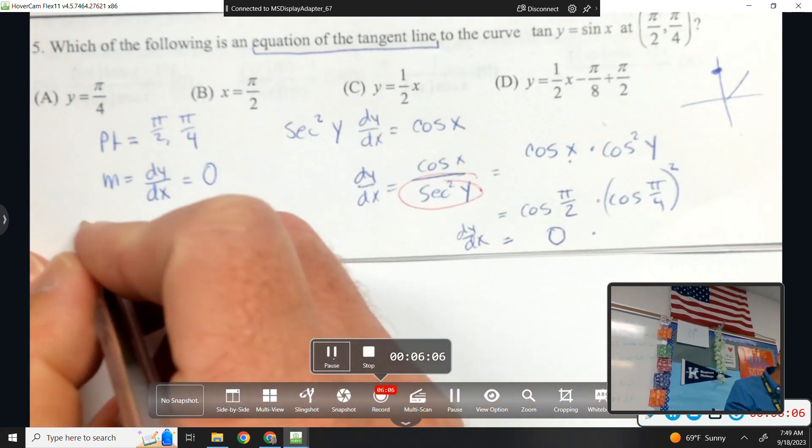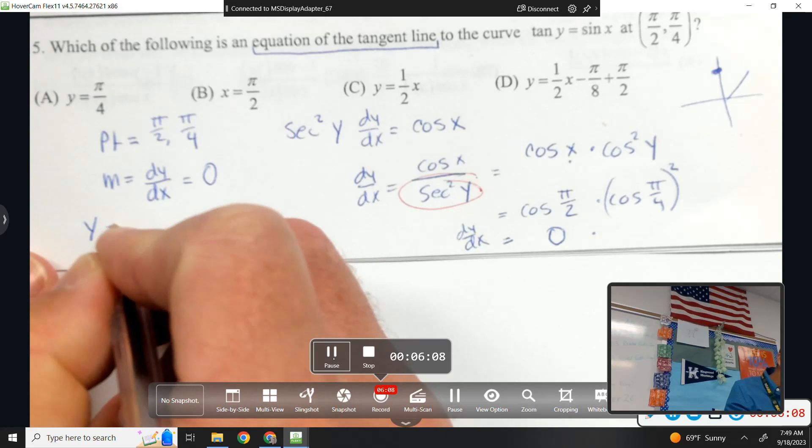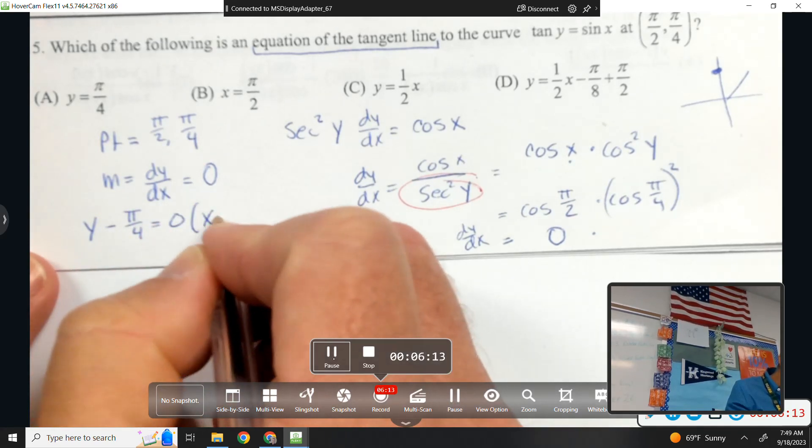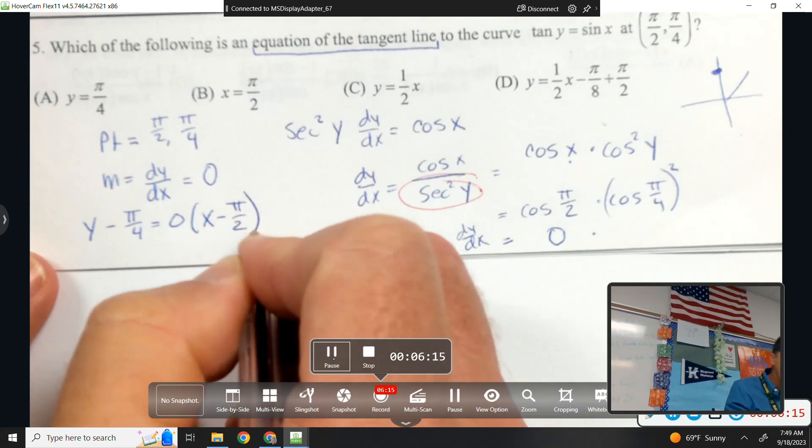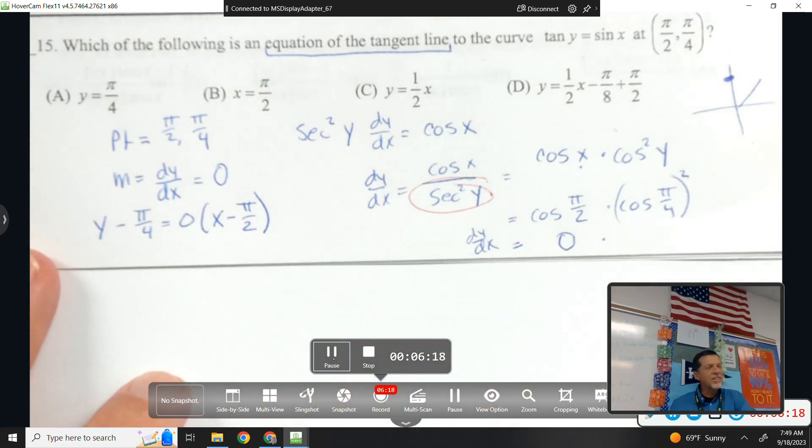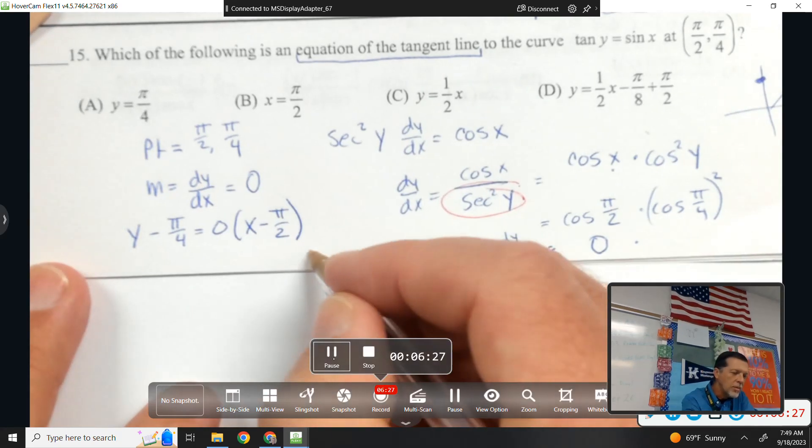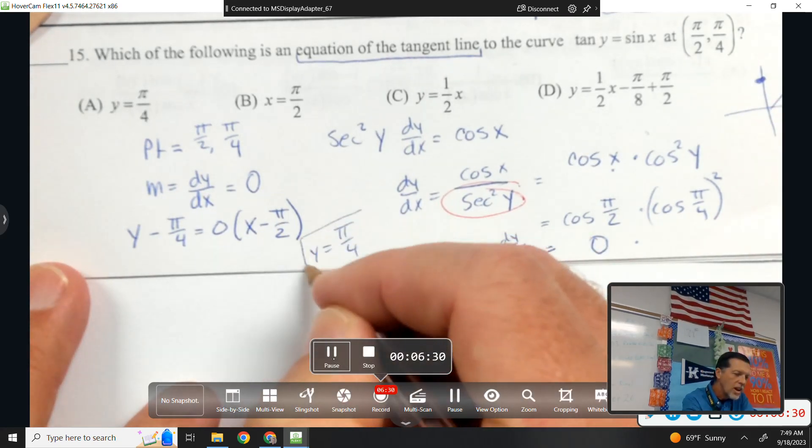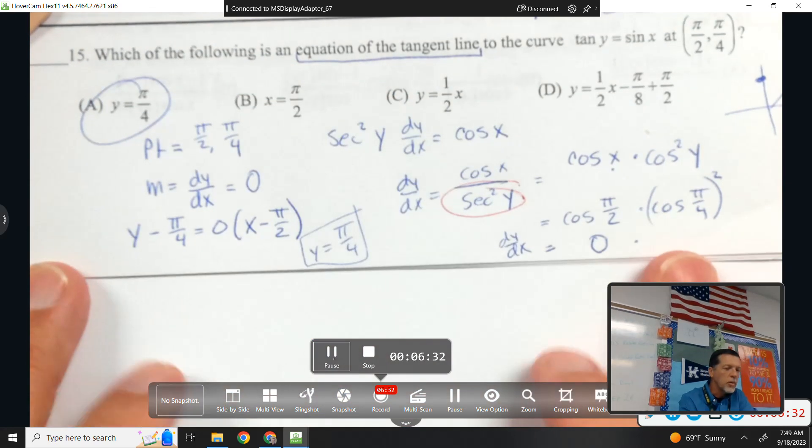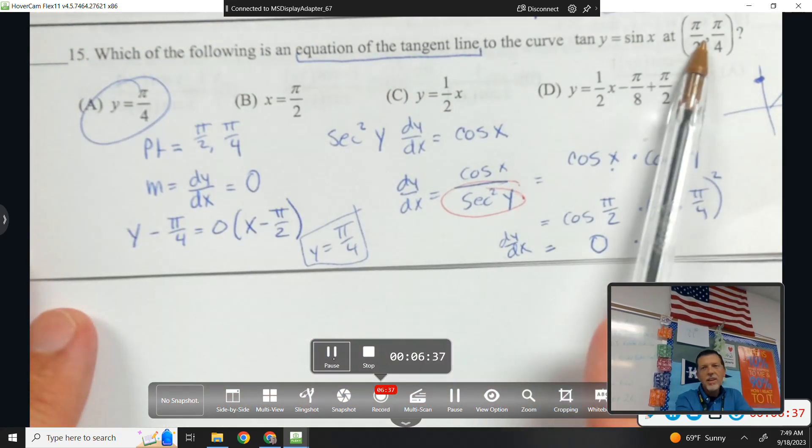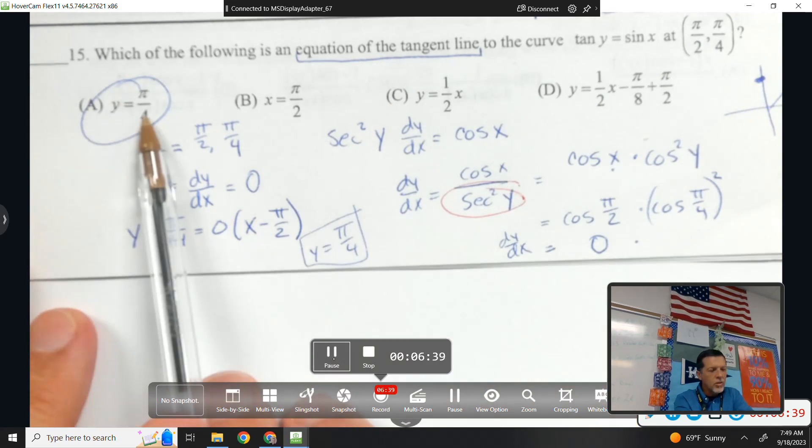I can still write the point slope form. y minus pi over 4 equals zero times x minus pi over 2. Obviously that is not the most simplified form of that line. But it still works as a first step. Zero wipes all this out. Move the pi over 4 over. And we get y equals pi over 4.